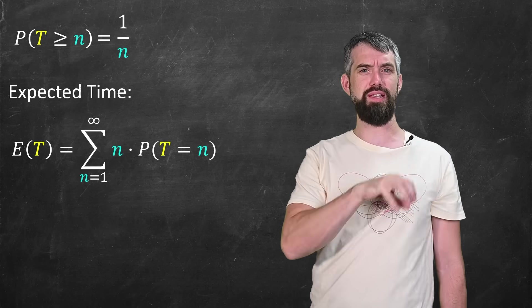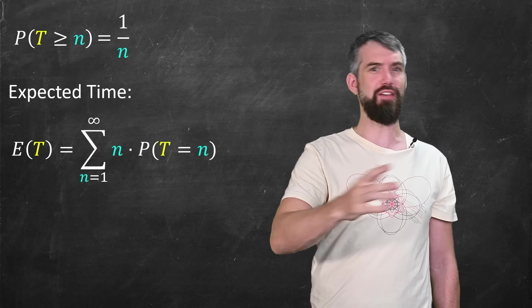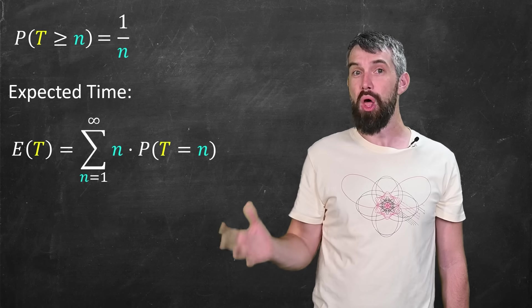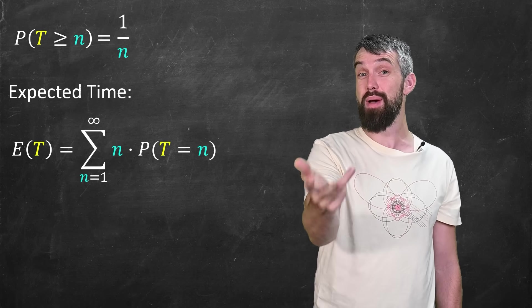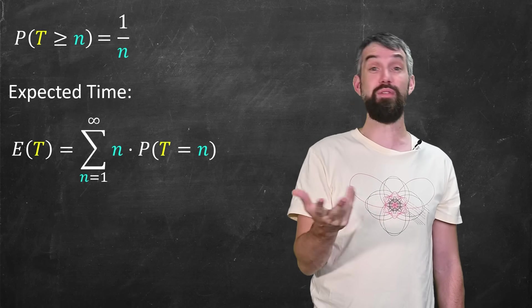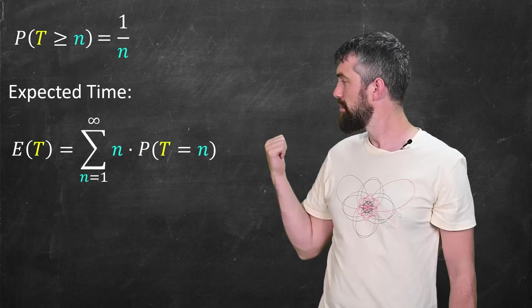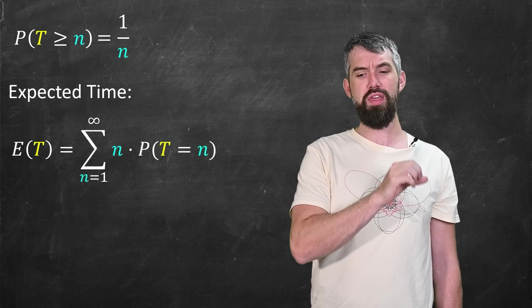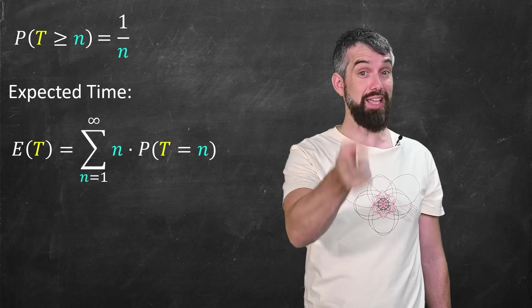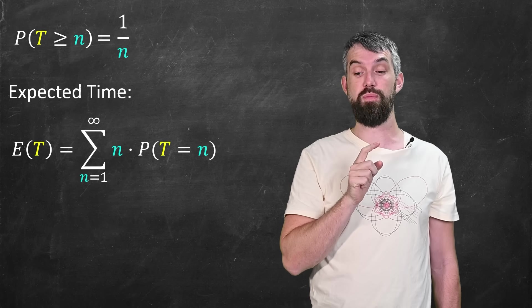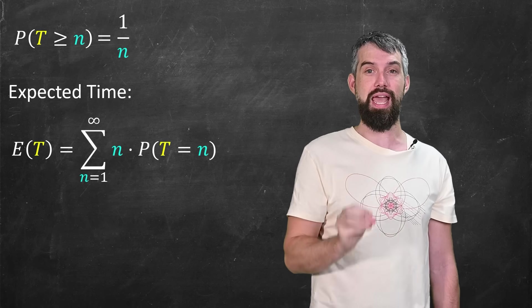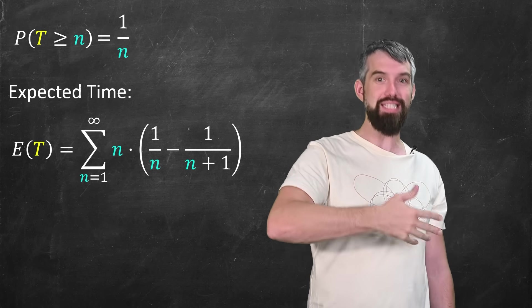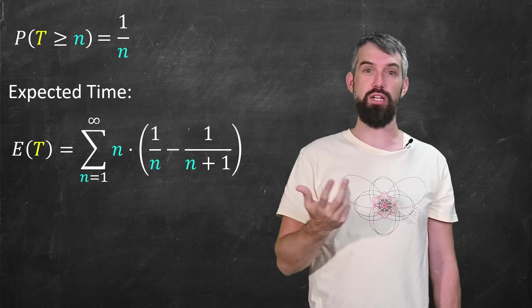Now, the n in this expression gets bigger and bigger. If I have to wait a really long time, it weighs heavily in my average. But the probabilities go down. So it's a bit of a question of which dominates. But we know the answer. At least we know the answer for the probability of T greater than or equal to n. I can plug in the probability of T equaling n by doing 1 over n minus the tail, so 1 over n plus 1. And now it's just algebra.